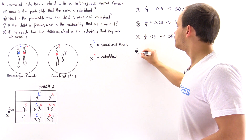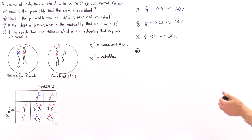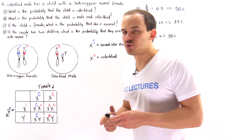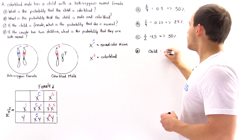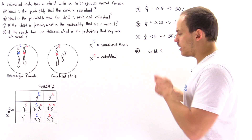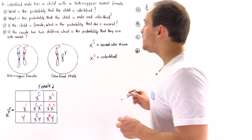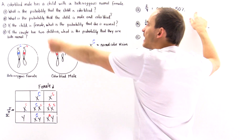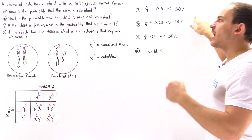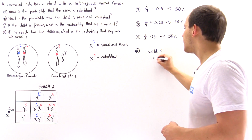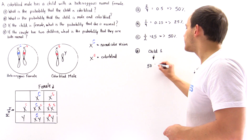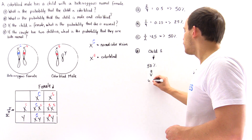Finally, in part D, if the couple has two children, what is the probability that both of them are normal? For child number one, the probability of being normal is 50% — since we saw in part A there is a 50% likelihood of being colorblind, which means a 50% likelihood of being normal, equivalent to 0.5.